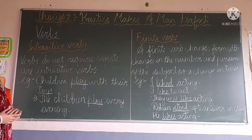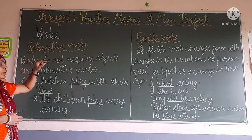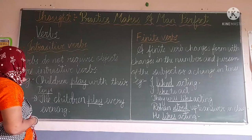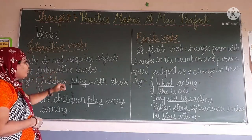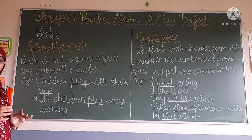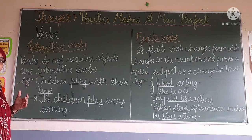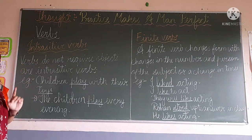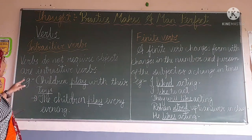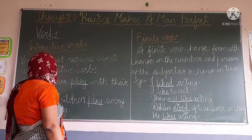Now we are going to learn another part, that is the intransitive verb. What does the intransitive verb mean? Verbs that do not require an object are intransitive verbs. The verbs which do not require objects — that is called the intransitive verb. Here I have given some examples — they don't need any kind of object. Children play with their toys.